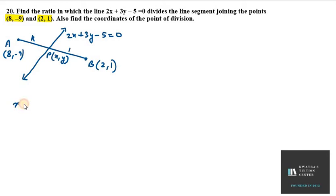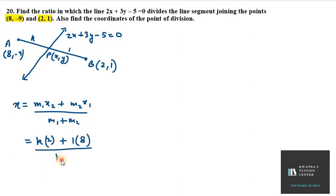x is m1·x2 plus m2·x1 over m1 plus m2. m1 is k, x2 is 2, m2 is 1, x1 is 8. m1 plus m2 is k plus 1. So x equals k(2) plus 1(8) over k plus 1, which is 2k plus 8 over k plus 1.